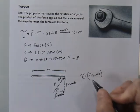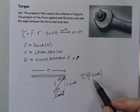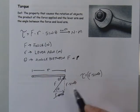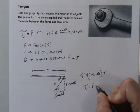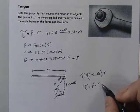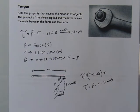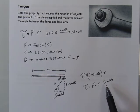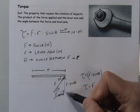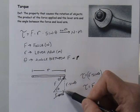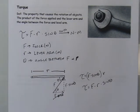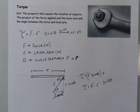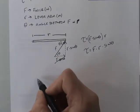The component along the rod produces nothing — no torque. The perpendicular component does produce torque. So the equation for torque is F sine theta, which is the component of force perpendicular to the lever arm, multiplied by the lever arm. The sine of theta reduces the force to only the portion contributing to rotational motion; the portion not contributing is ignored because it does not produce any torque.